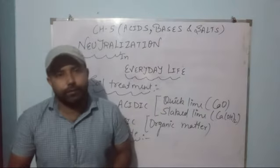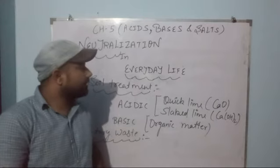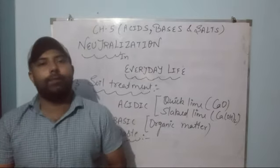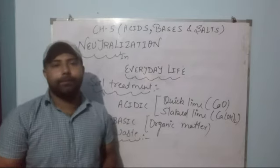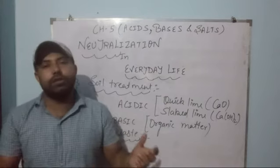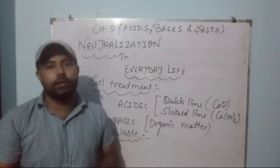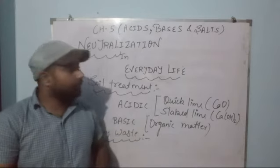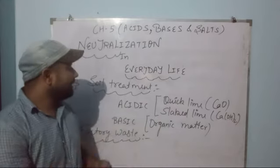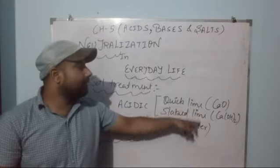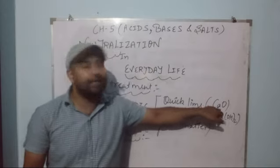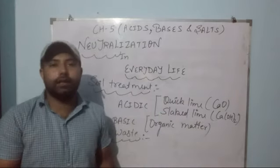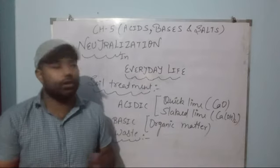Neutralization is also used in soil treatment. When we use excessive chemical fertilizers, the nature of the soil becomes acidic. But for good crop production, the soil should be neutral. To neutralize the acidic soil, we add certain bases: quick lime (calcium oxide) or slaked lime (calcium hydroxide). Adding these bases eliminates the acidity and makes the soil neutral for better production.